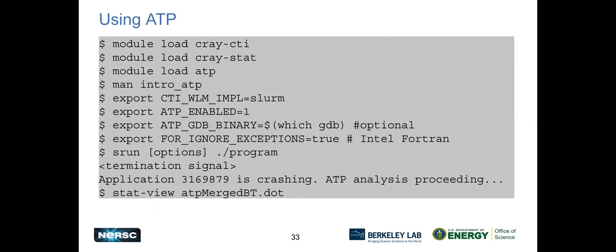And again, a lot of weird setup with CTI. You have your intro ATP man page. You have an ATP enabled environment variable that you must set. And this is so that you can run ATP off or on if you want to. There's an ATP GDB binary environment variable that you can set to whatever GDB you want to use. If you have a specific GDB or a specific other debugger in mind that you want to use, there's an environment variable to tell the Intel Fortran compiler to ignore exceptions so that it won't interfere with things similar to how the GNU Fortran compiler does. And then you just S run your program. And when the termination signal hits ATP takes over and tells you your application is crashing analysis is proceeding. It'll print out a little bit of a stack backtrace, and then you can view the merged backtrace that's produced in dot format.